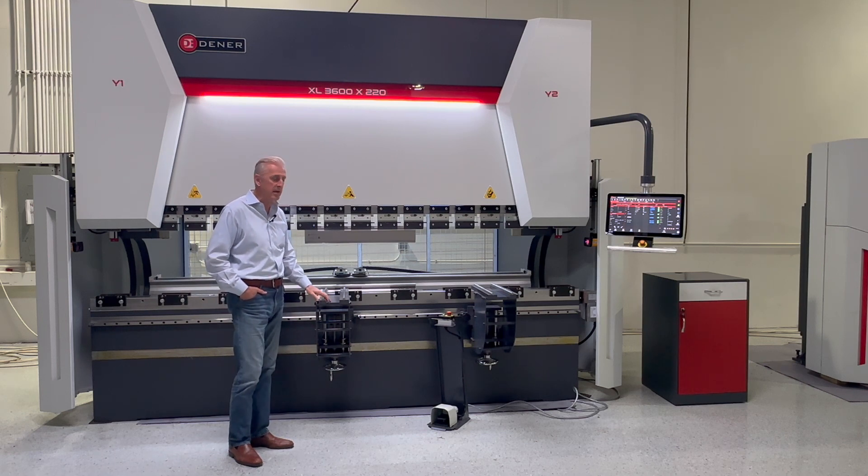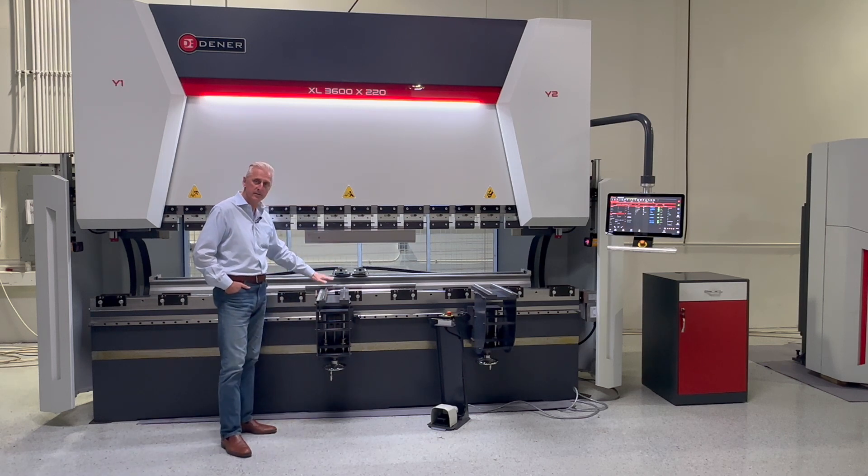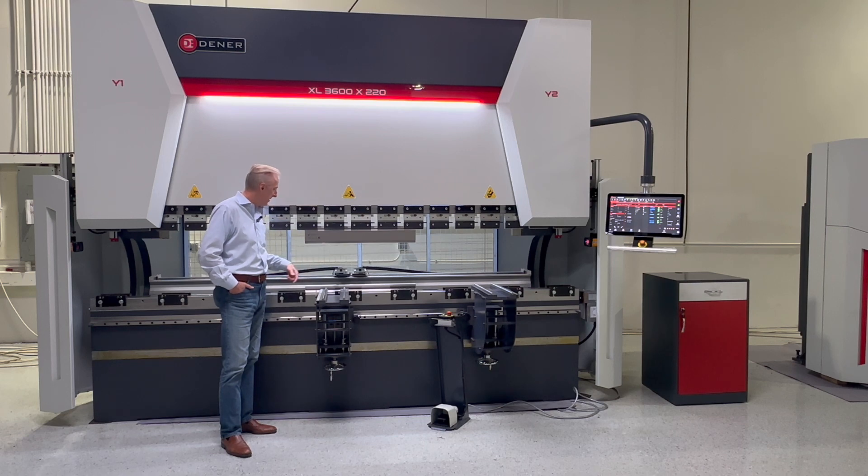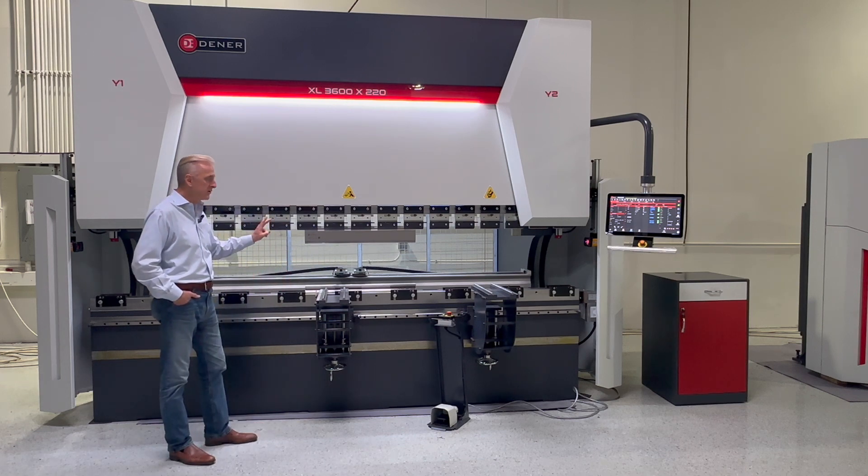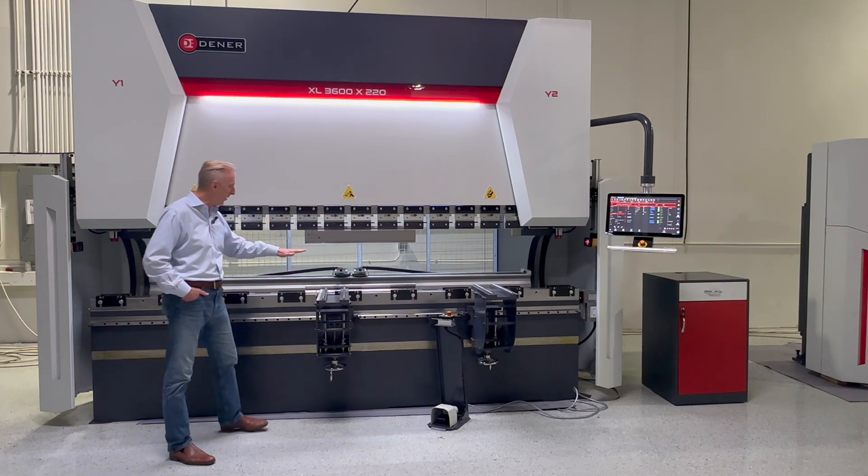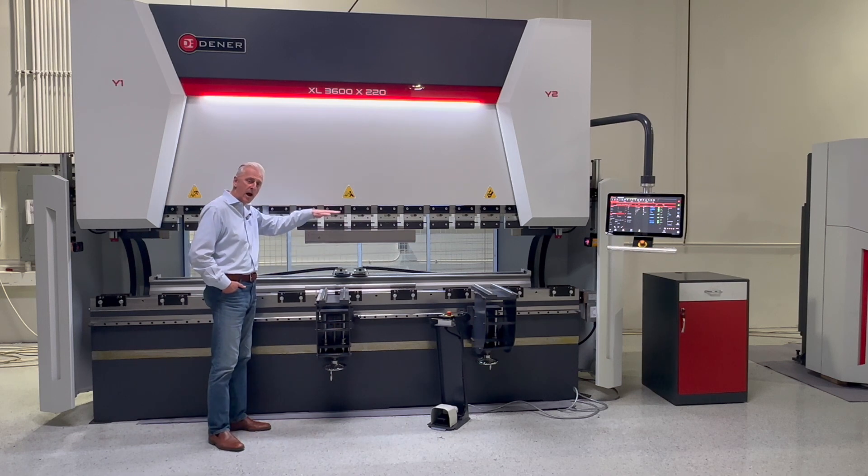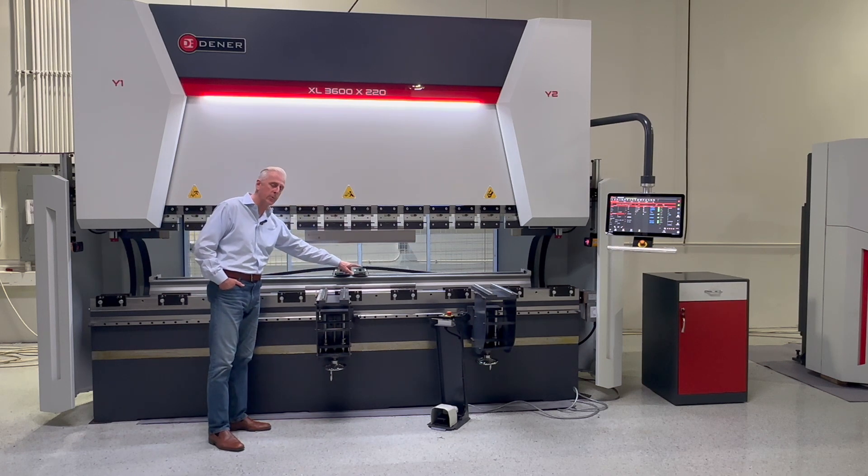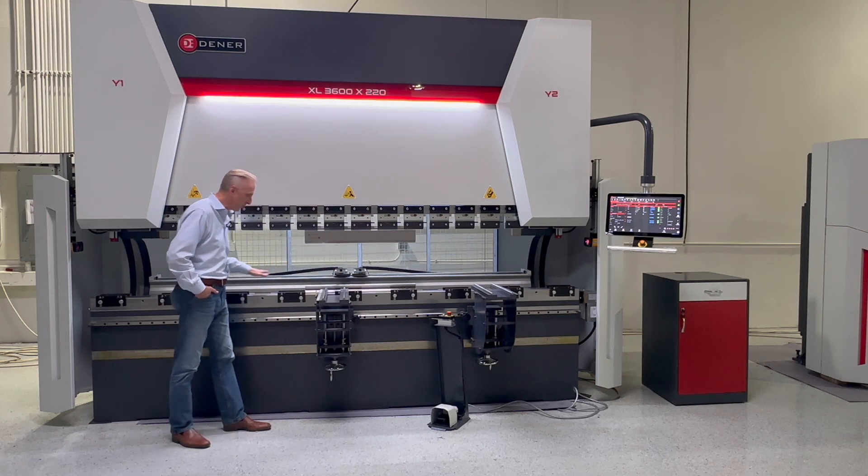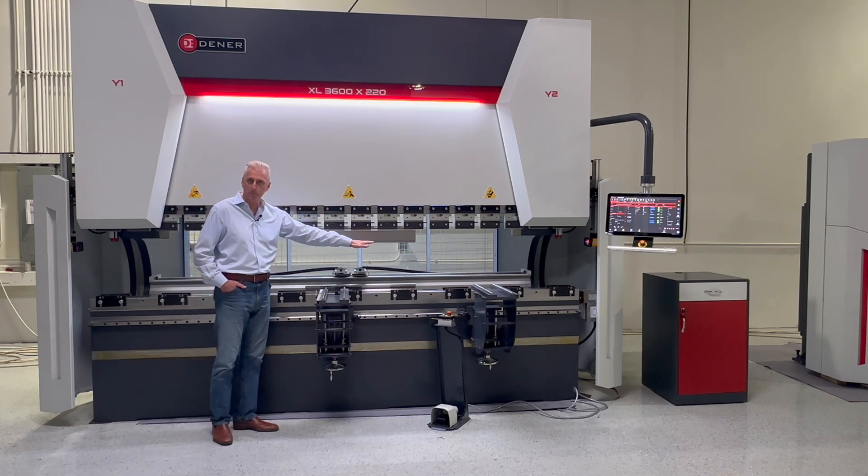The Puma Series machine has a very large open height and backgauge stroke. 40 inches is attainable on most all the backgauges. The machines are normally with a minimum of two axis backgauges, so X and R. This machine has a power Z1 and Z2, so these fingers are on gear tracks and can move left and right according to your program.